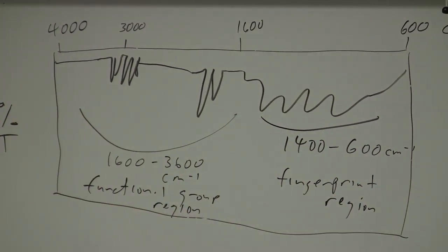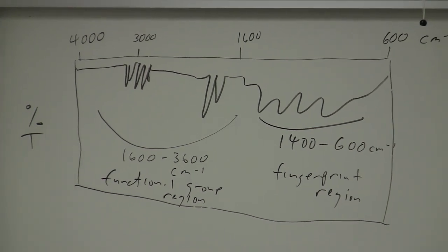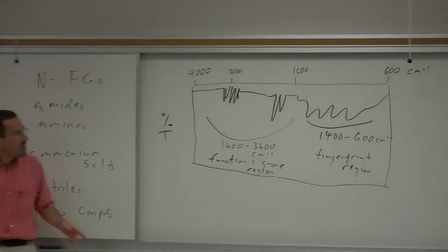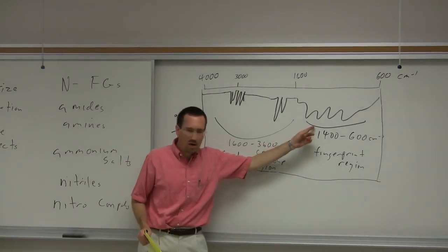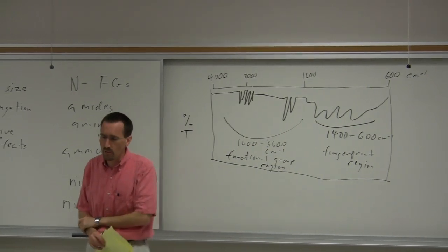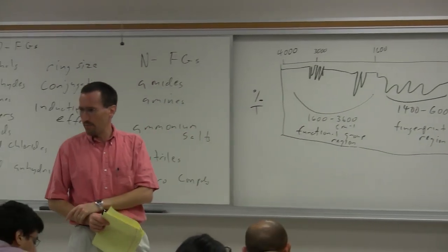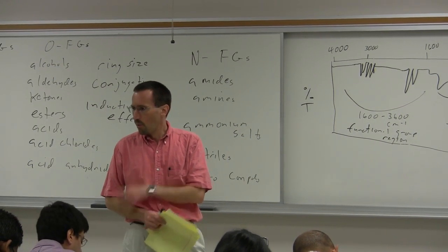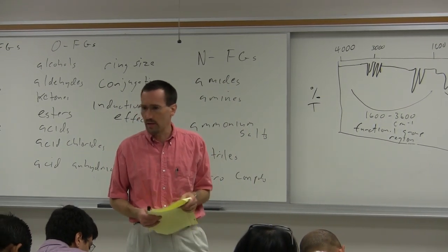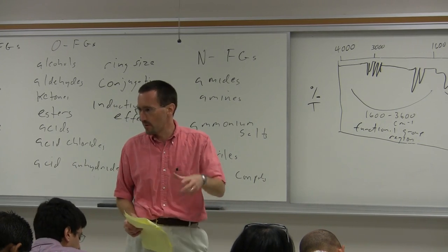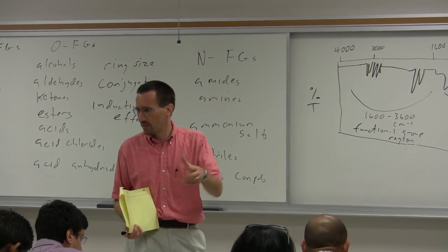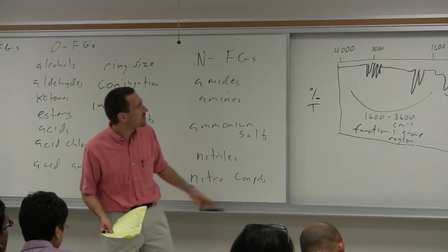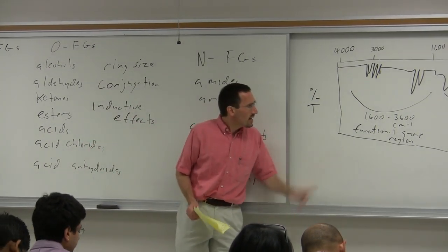Maybe on Wednesday we'll look at aromatic substitution patterns from the fingerprint region. The textbook has very nice appendices — take the time to flip through it. One appendix will give you correlating peaks to figure out the substitution pattern on an alkene: whether it's terminal, cis, or trans.